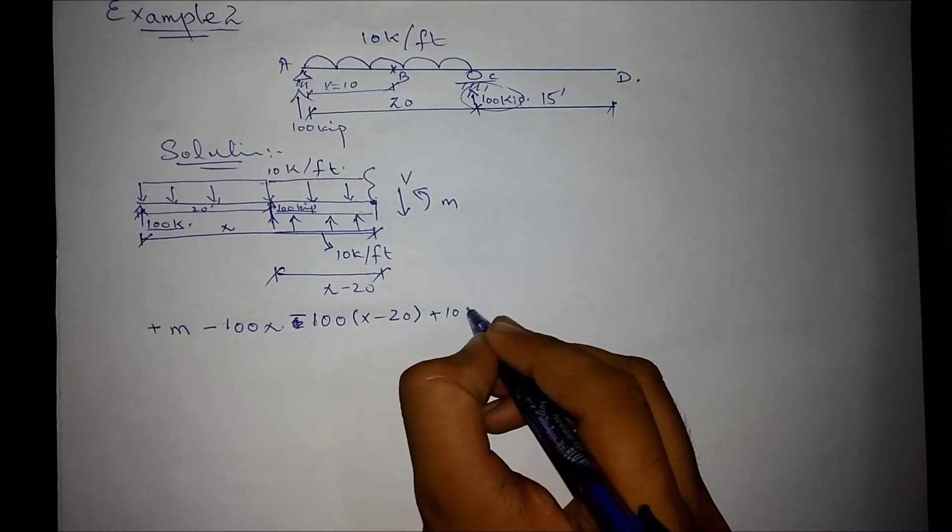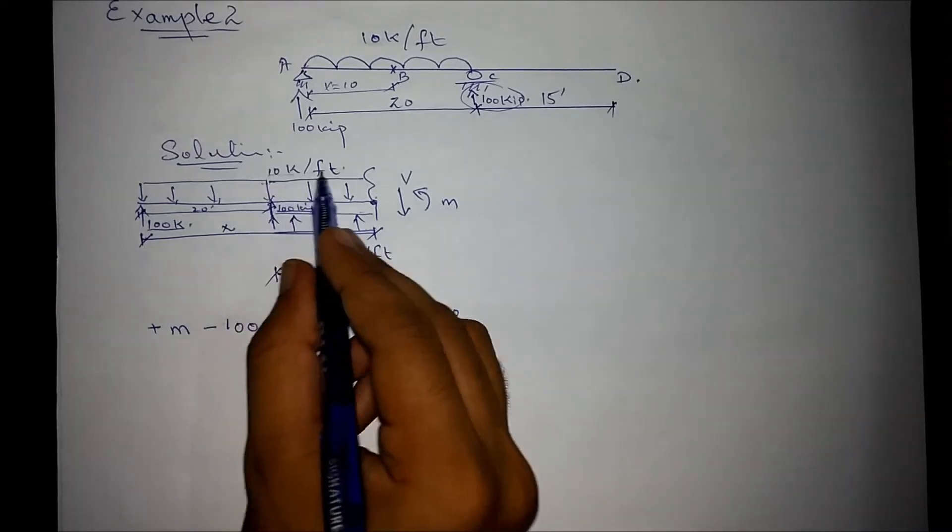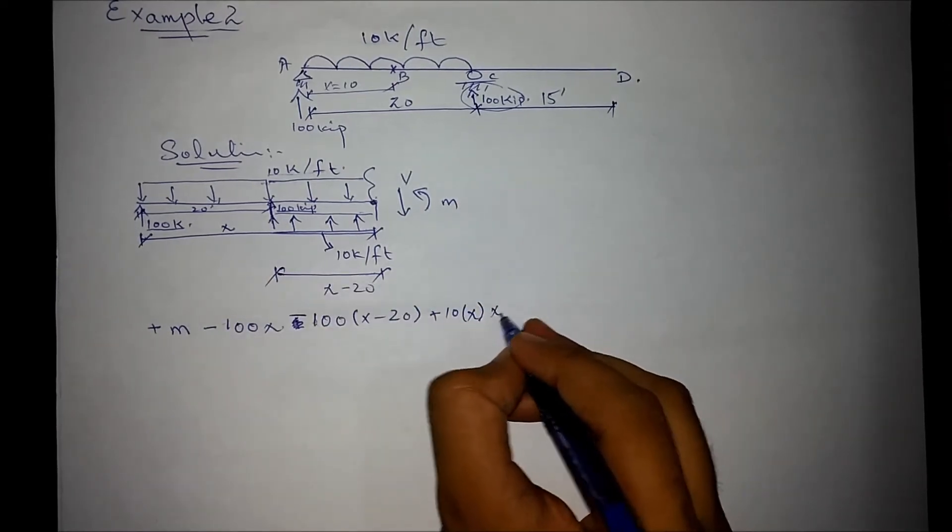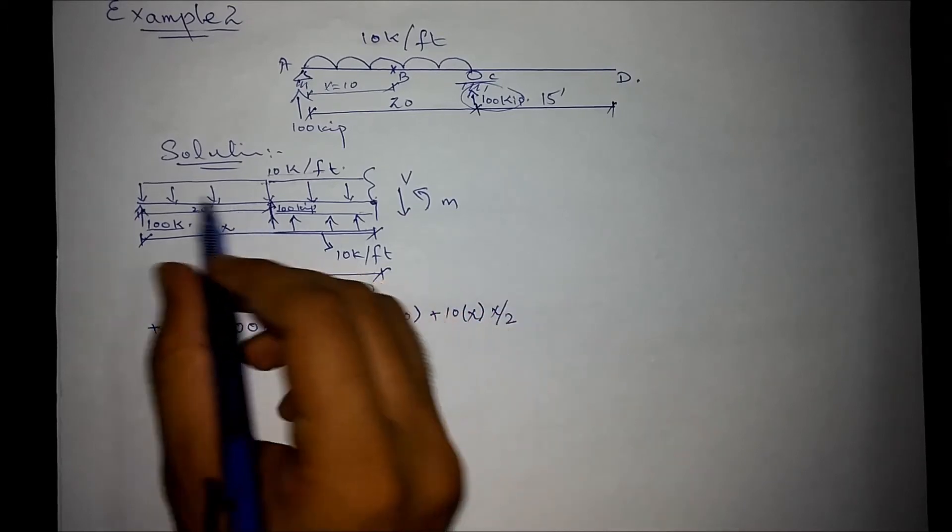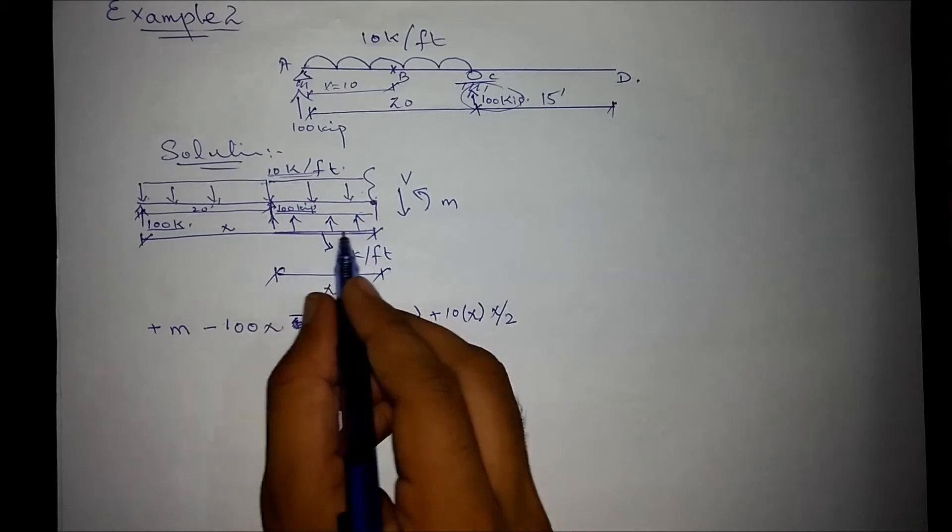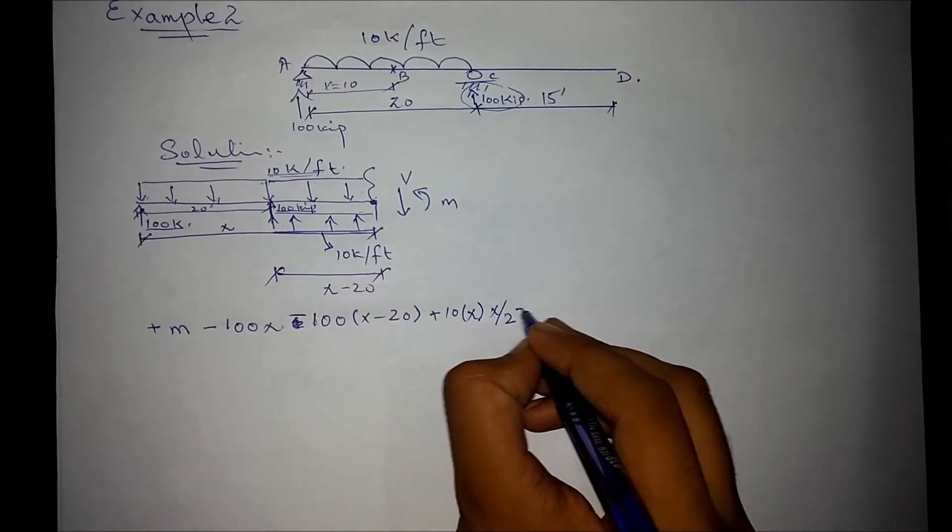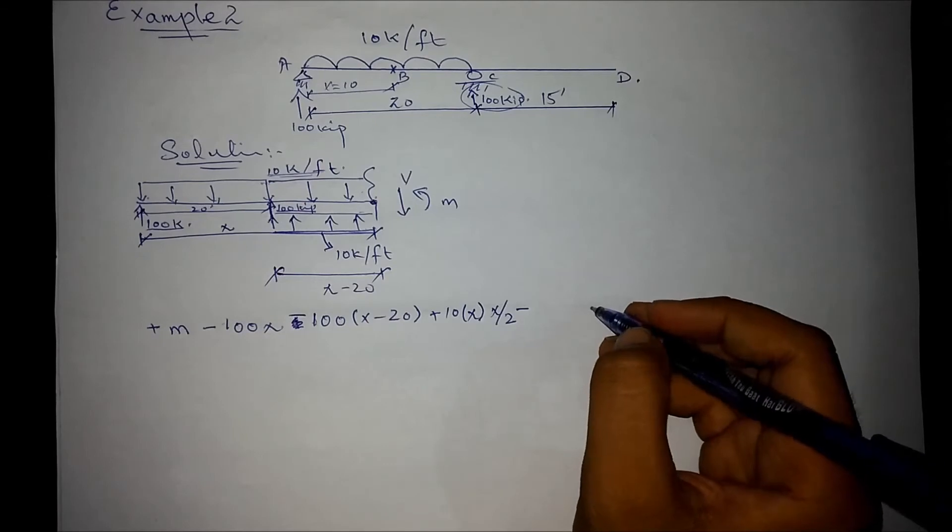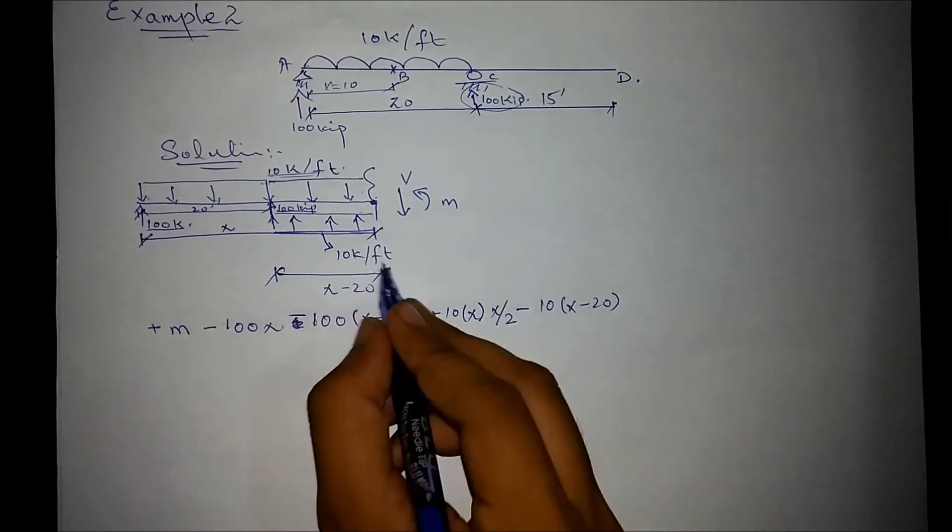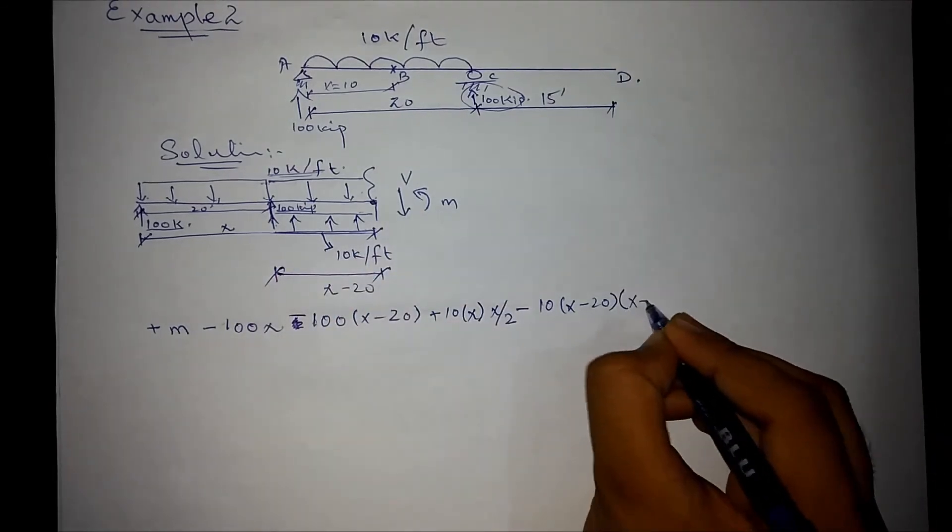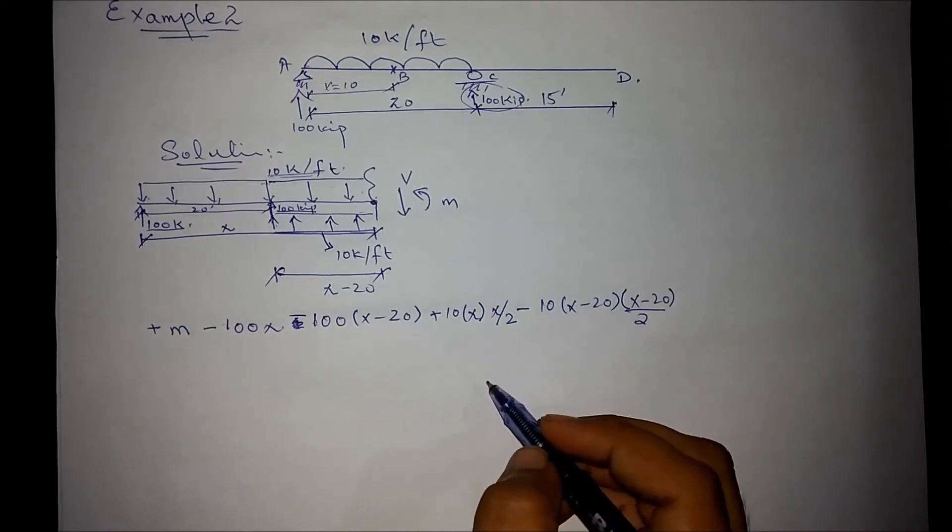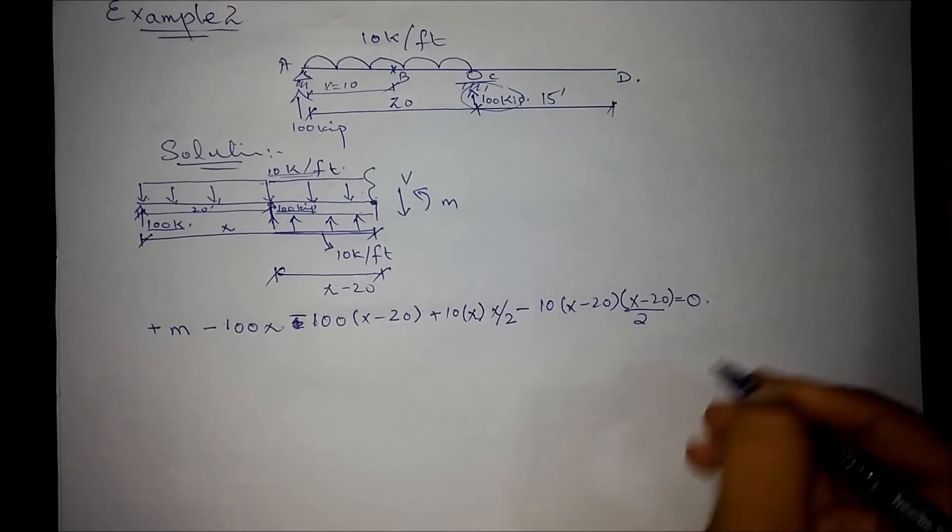That means m minus 100x plus 10 into the distance for the force and the lever arm would be x by 2 for this UDL. And this UDL is rotating in clockwise direction so it would be negative. Minus 10 into x minus 20 and its lever arm would be x minus 20 over 2 is equal to 0.